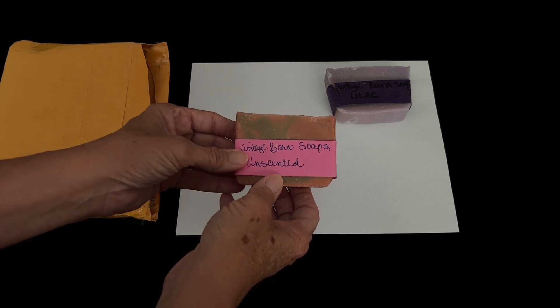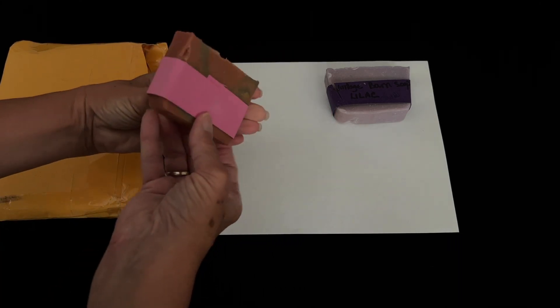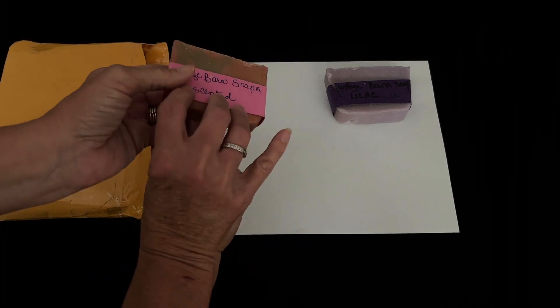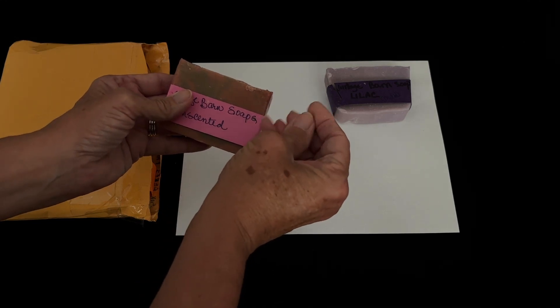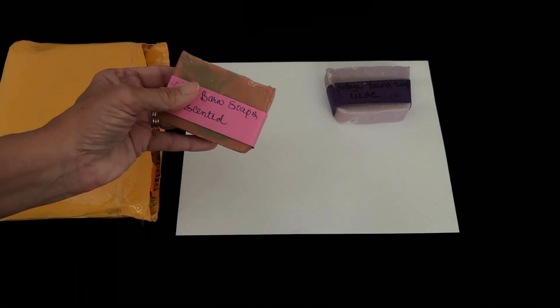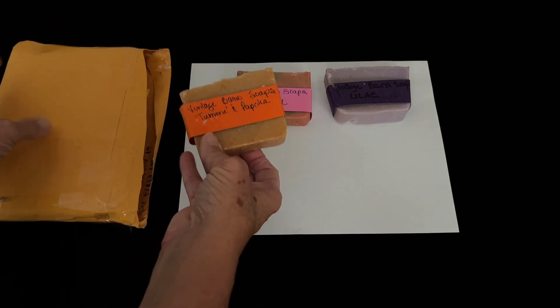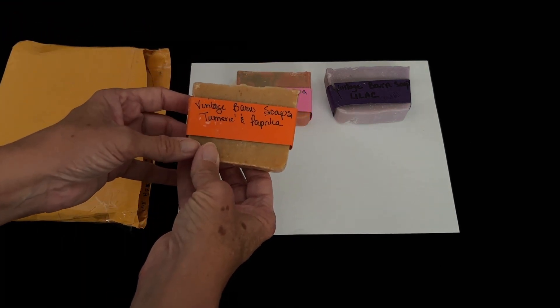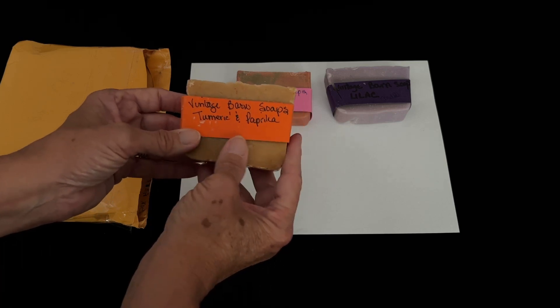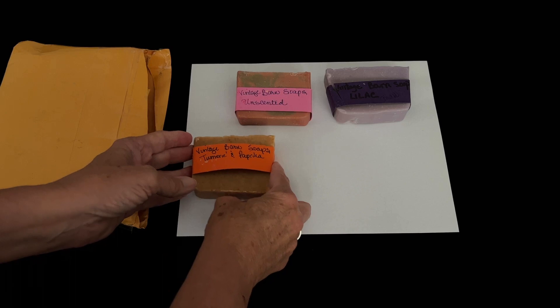And this soap is unscented and it's very, very soft. Looks like they're going to last a long time. And here's a third bar. Vintage Barn Soaps. Turmeric and Paprika. Very nice smells. Scents.